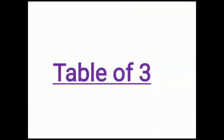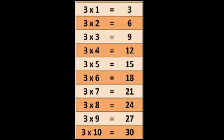Table of 3: 3×1 is 3, 3×2 is 6, 3×3 is 9, 3×4 is 12, 3×5 is 15, 3×6 is 18, 3×7 is 21, 3×8 is 24, 3×9 is 27, 3×10 is 30.